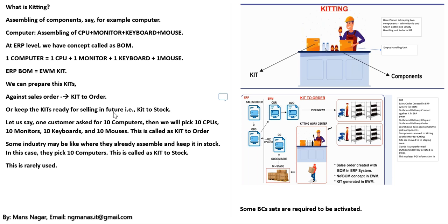Or keep the kit ready for selling in the future — we call it kit to stock. When you put into the stock, after creating the kits, he's going to post the goods issues, then delivery updates, then outbound delivery order. The warehouse workers are going to pick based on the warehouse task and warehouse process type. We also need to activate some business configuration sets — BC sets.